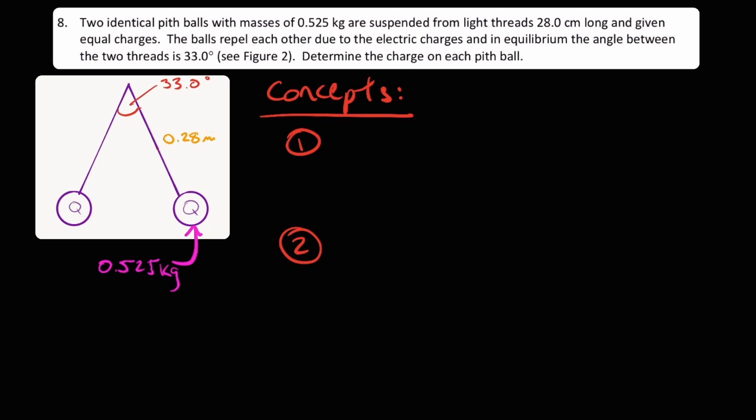The balls repel each other due to the electric charges, and in equilibrium, the angle between the two threads is 33.0 degrees. See figure 2, which is obviously this. Determine the charge on each pith ball.